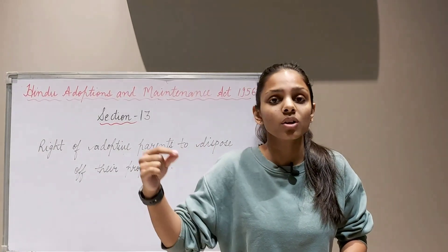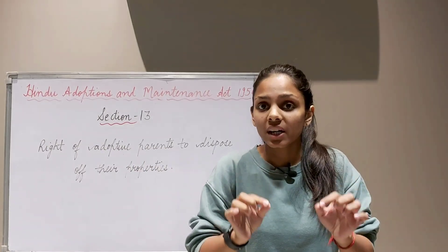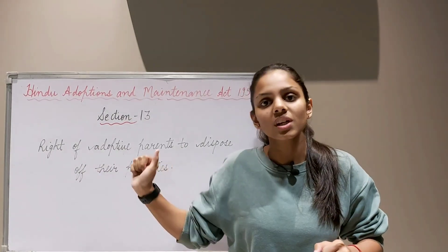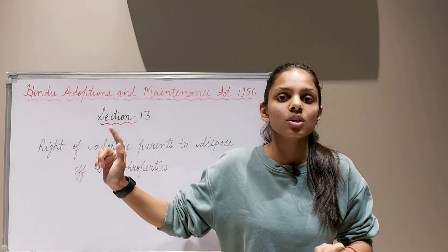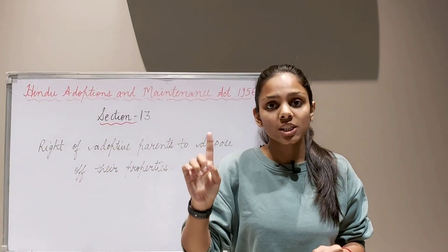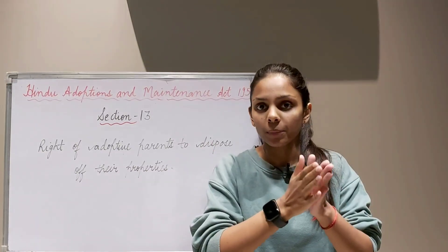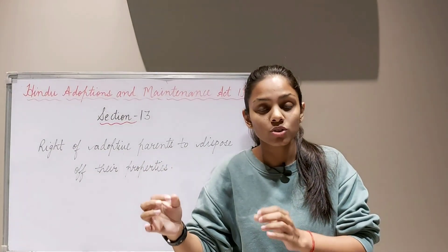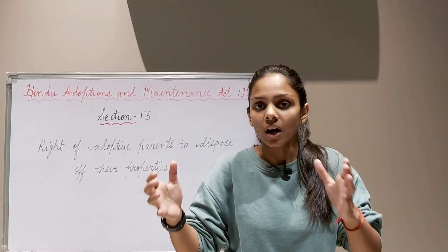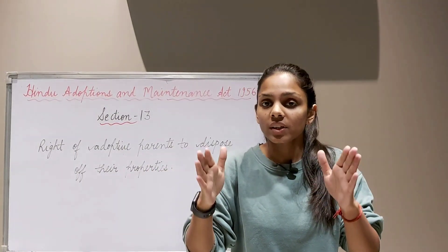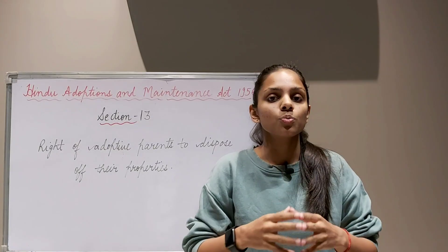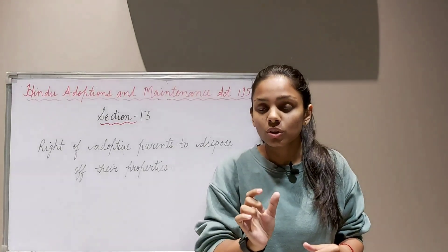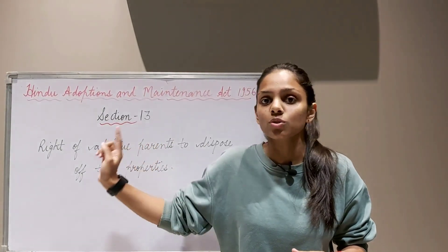If adoptive parents do not want to give property to their adopted child, they may validly deprive that adopted child of the right to inherit property by disposing of it during their lifetime, or by writing a will in someone else's name. However, there is one exception: if there is an agreement to the contrary — an agreement between the adoptive parents and the natural parents on behalf of the adopted child — then subject to that agreement, they cannot dispose of the property freely. A prior agreement would be a restriction or limitation on this right.